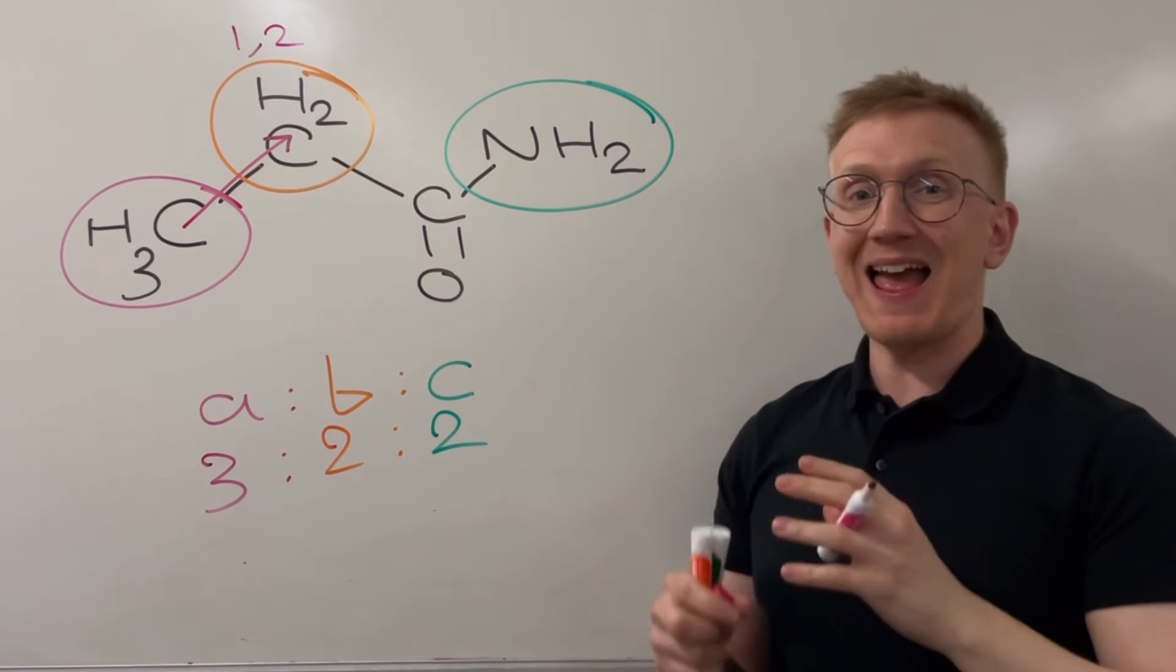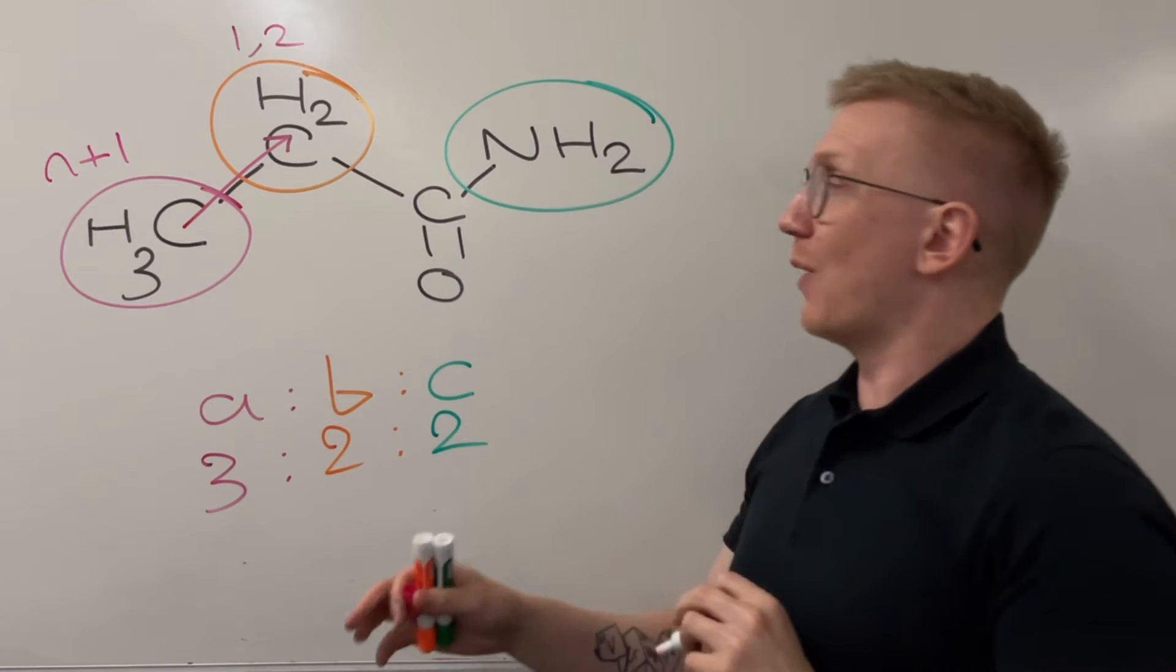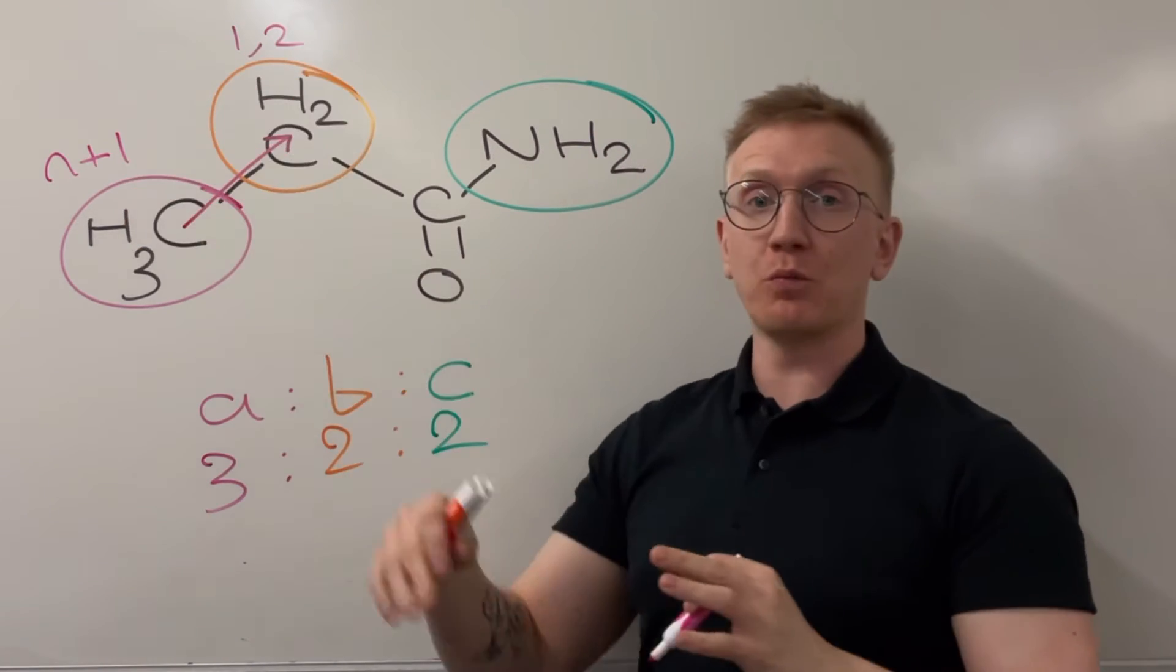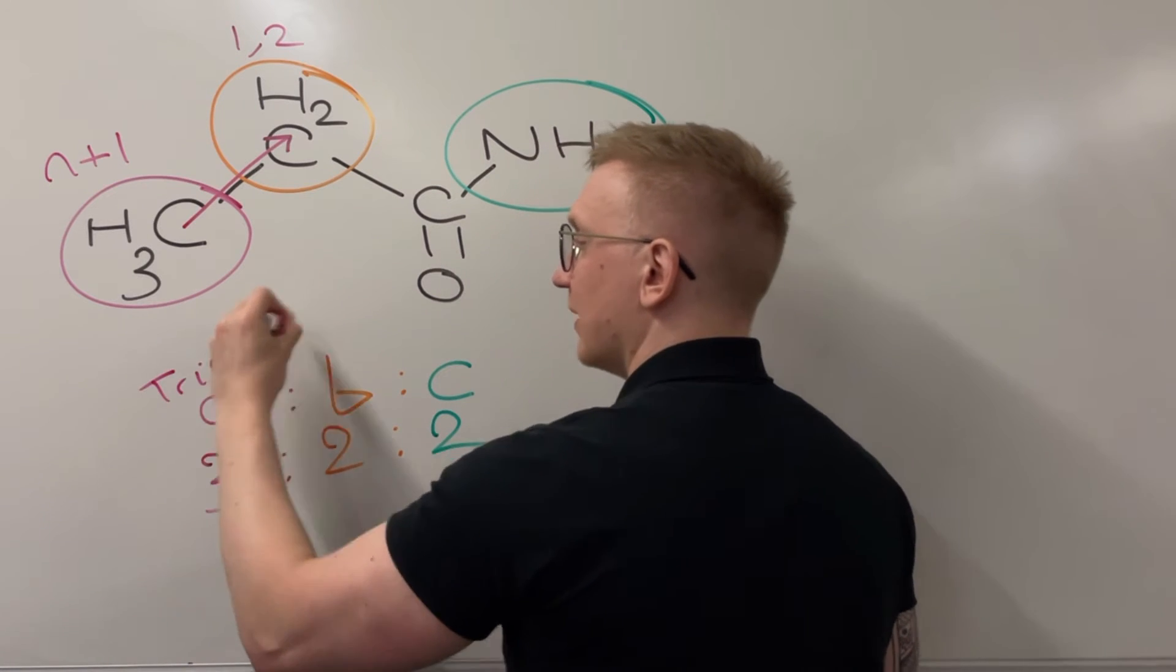So environment A is going to be split according to the n plus 1 rule. So our n value here for environment A is 2. So n plus 1 is 3, so what we're going to have here is a triplet.